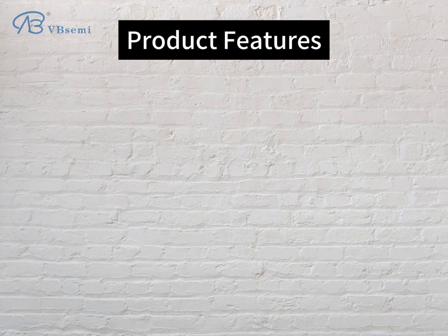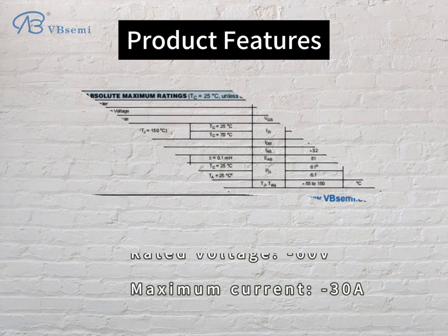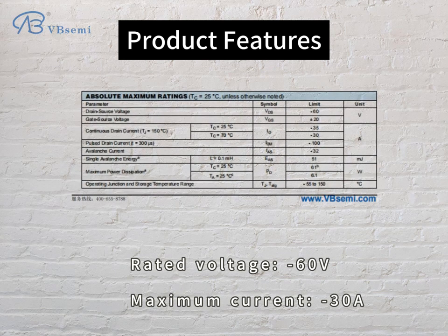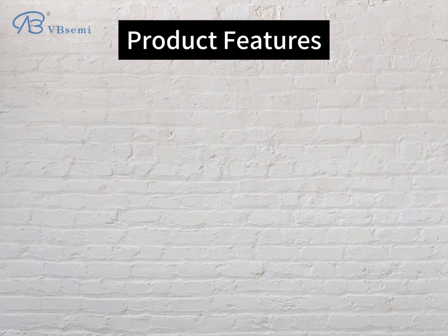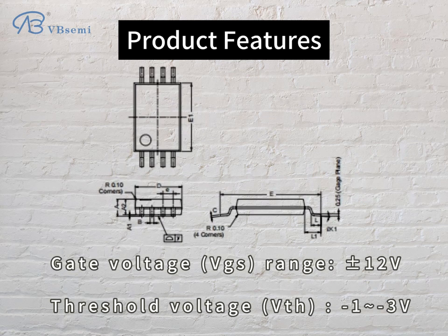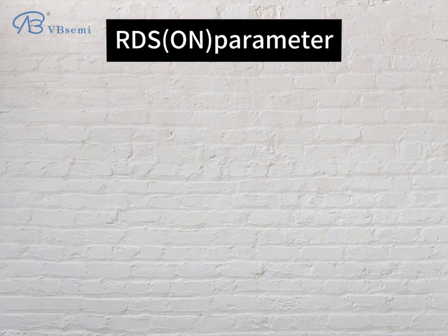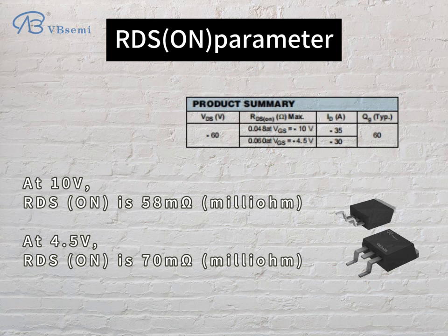Product Features: Rated Voltage -60V, Maximum Current 30A, Gate Voltage VGS Range 12V, Threshold Voltage VTH 1-3V, RDS-ON parameter: at 10V, RDS-ON is 58mΩ; at 4.5V, RDS-ON is 70mΩ.